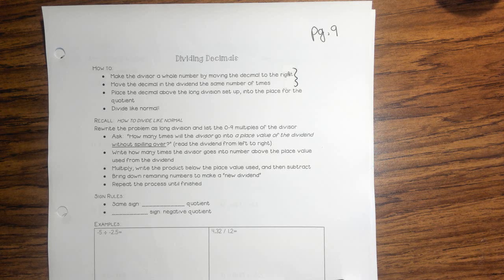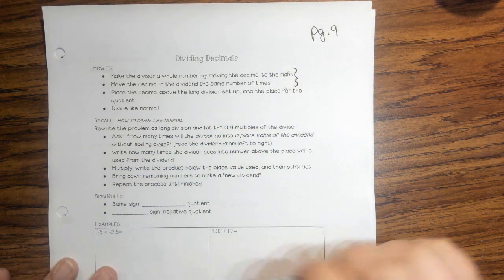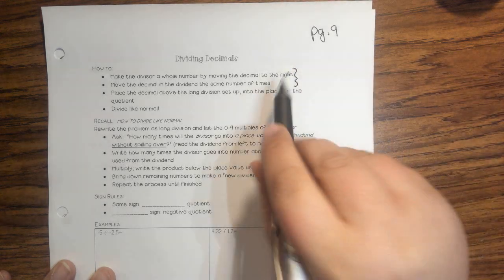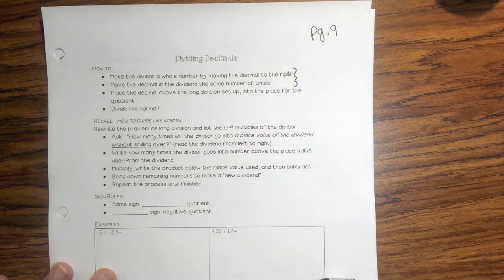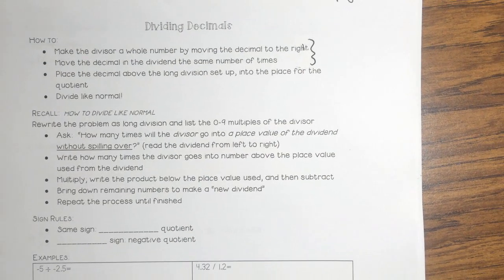Okay, so this is page 9 in our binders. I've already pre-labeled page 9 on our binders, and I am sorry there was this little curly brace got put over the words. I fixed mine — you guys can't fix yours, it's in printer ink. Yesterday we multiplied decimals, and now we're going to divide decimals.